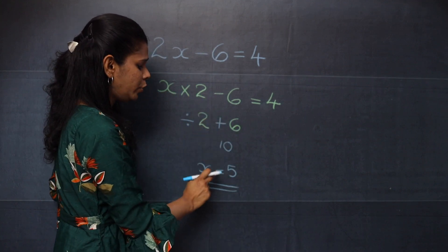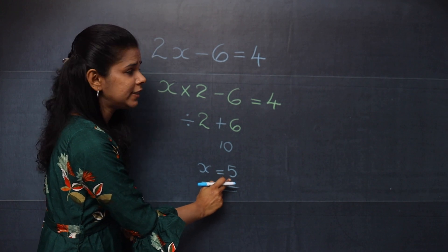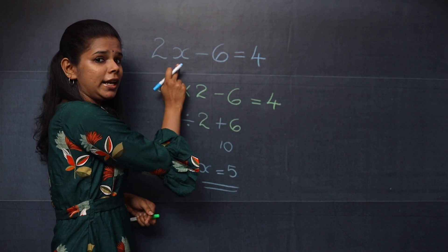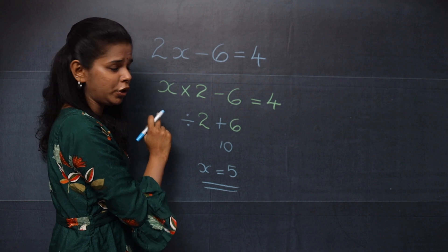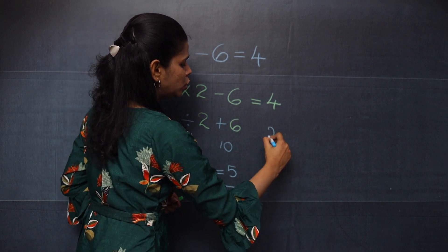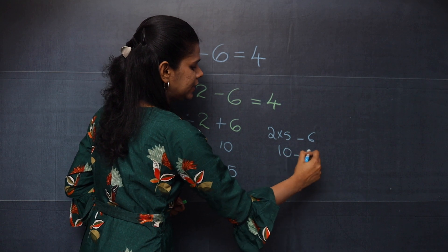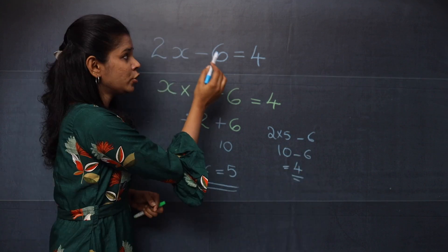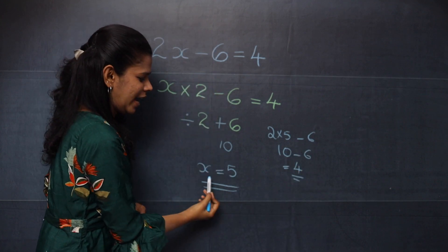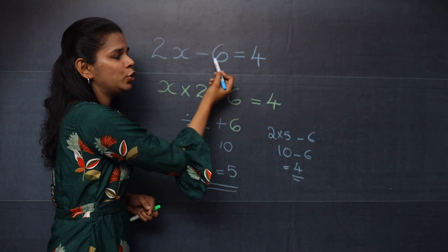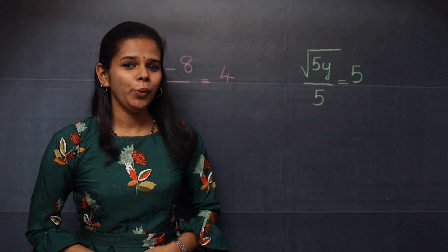If you want you can check it out by substituting x equal to 5 in the LHS. So when you substitute you can see it becomes 2 into 5 minus 6. That is 10 minus 6 equal to 4. So you can conclude that x equal to 5 is the solution of this equation.